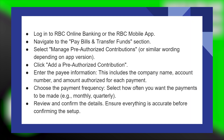This includes the company name, account number, and amount authorized for each payment. After that, select how often you want the payments to be made — for example, monthly or quarterly.